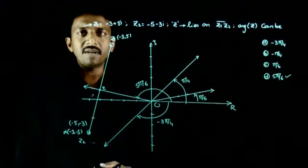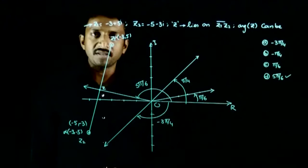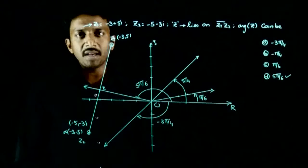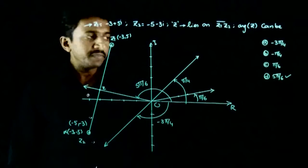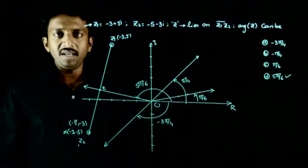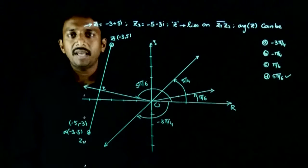So the argument of z can be equal to 5π/6. Among the four options, the best option is 5π/6. There could be many other angles as well, but you have to check among the given options. So 5π/6 is the answer. Option D is the right answer. Thank you.